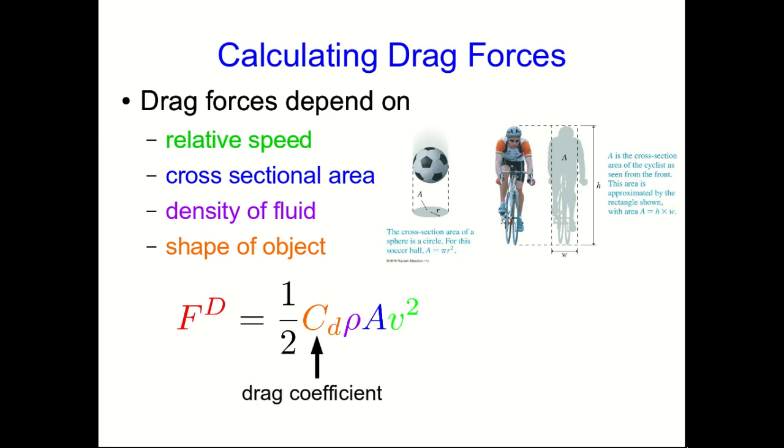And the coefficient, which is called the drag coefficient in orange, is something that encapsulates a whole bunch of information about the shape of the object, and comes up with a number.